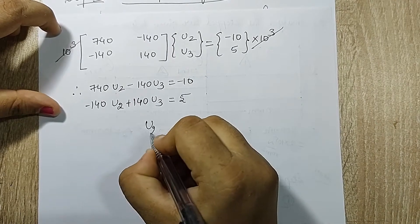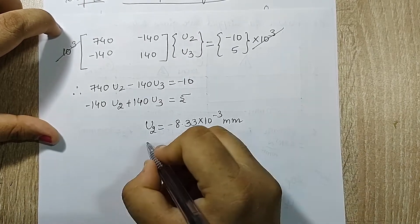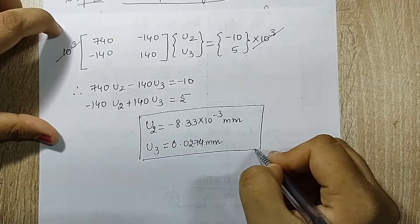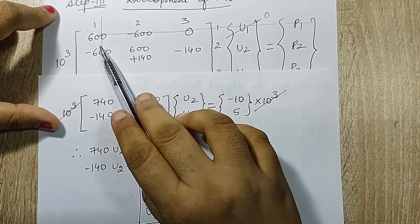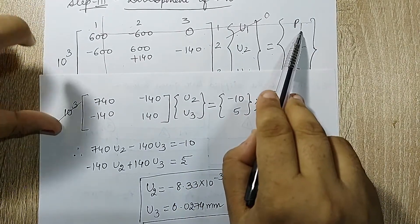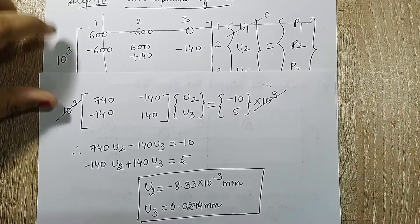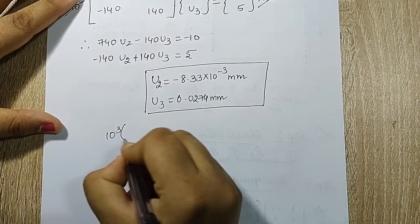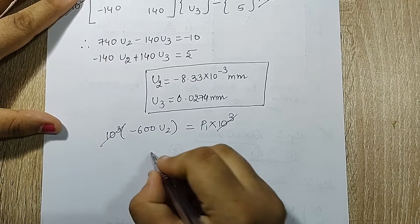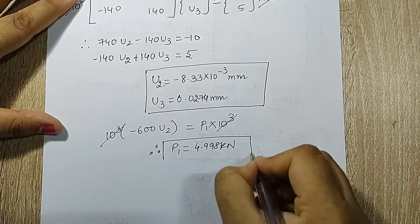On solving these two equations I get the value of u2 as minus 8.33 times 10 raised to minus 3 mm and u3 is 0.0274 mm. Now I will go back to this and I will write the equation for p1. I will have 600u1, u1 is 0. So I have only minus 600u2 is equal to p1. Now here 10 raised to 3 is written. You can see I have written 10 raised to 3 here common outside. So my equation is 10 raised to 3 minus 600u2 is equal to p1 into 10 raised to 3. This 10 raised to 3 gets cancelled. Therefore on substitution of u2, I get p1 as 4.998 kN.